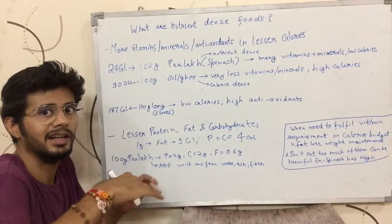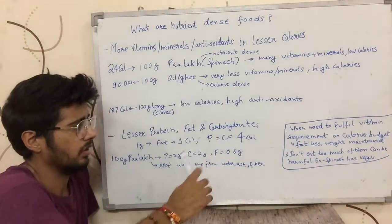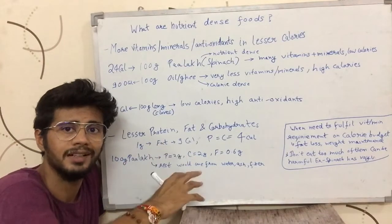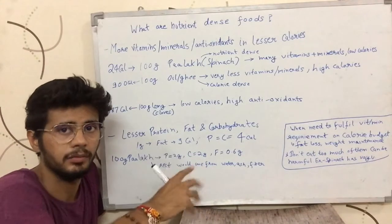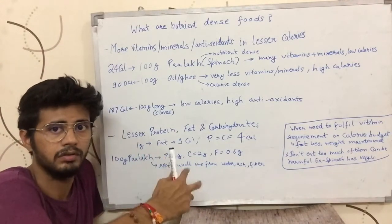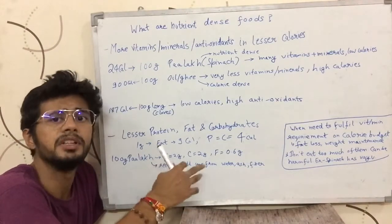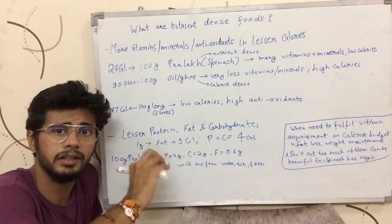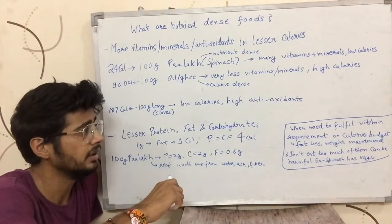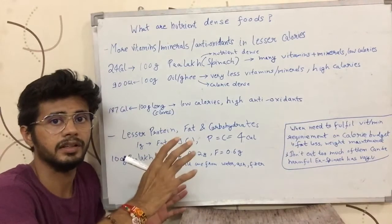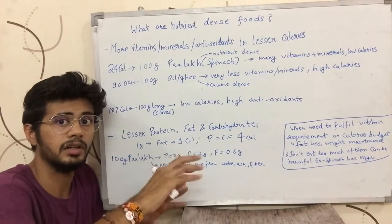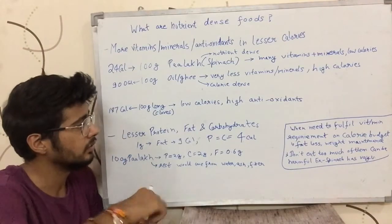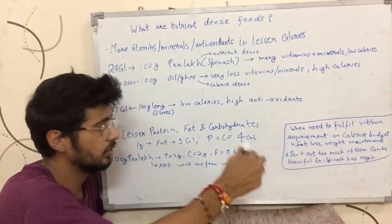Now, what are the advantages of nutrient dense foods? They are helpful when you need to fulfill your vitamin or mineral requirements while on a calorie budget — for example, when you are trying to lose weight, do fat loss, or maintain weight on low calories. When you are on a caloric budget, you want to give your body a lot of vitamins, minerals, or antioxidants without eating foods that have a lot of calories. That is where nutrient dense foods can help you.